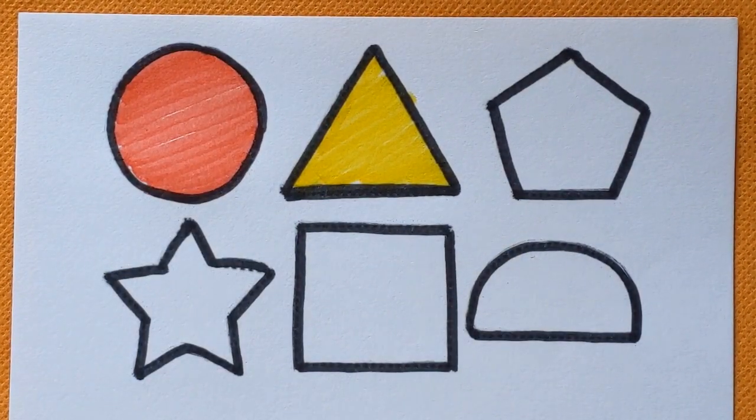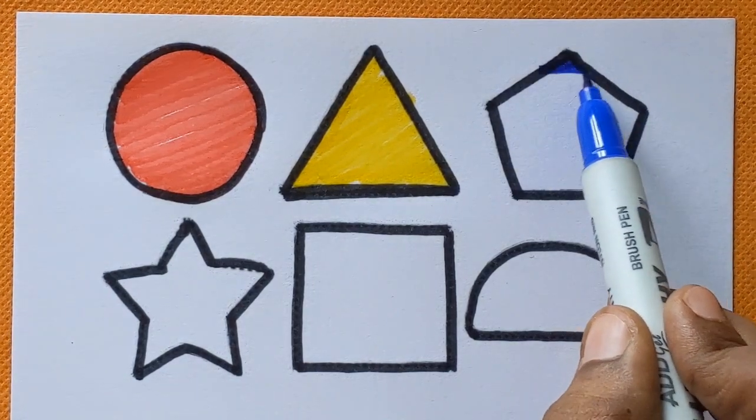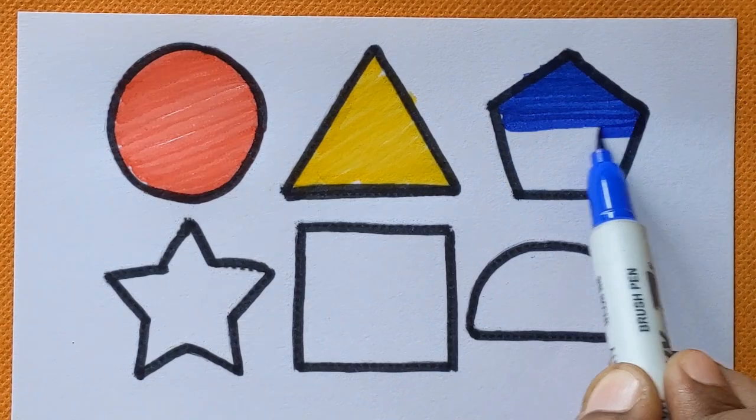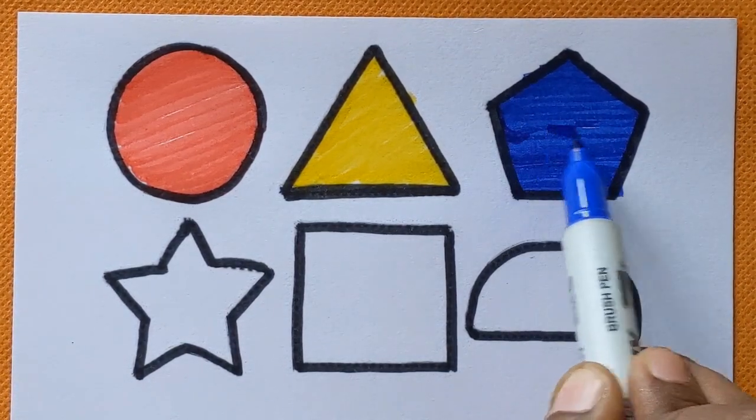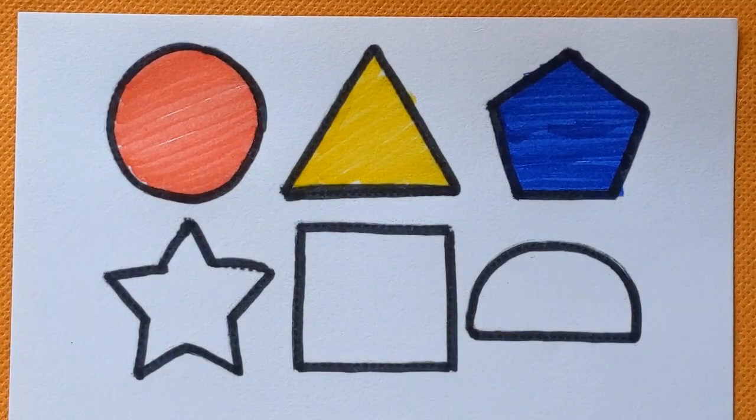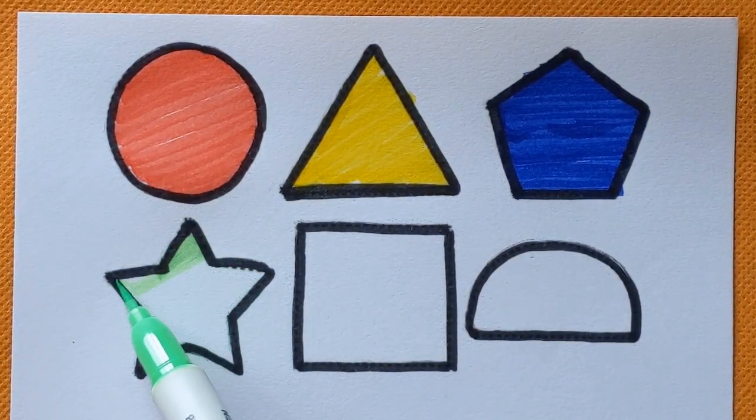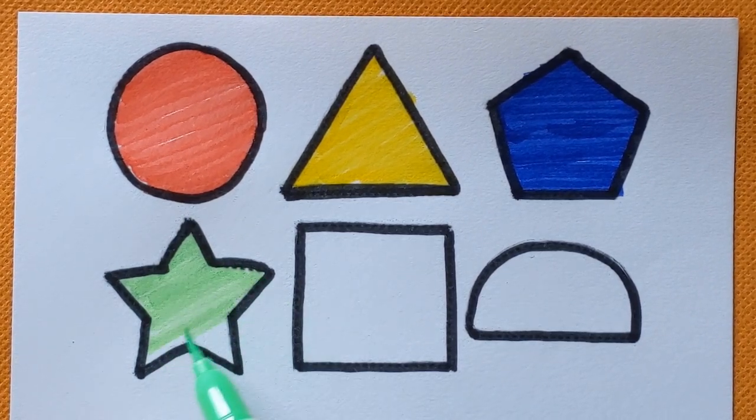Next one is pentagon. Which shape is this? This is pentagon with a blue color. Next is star shape. Star shape with a light green color.